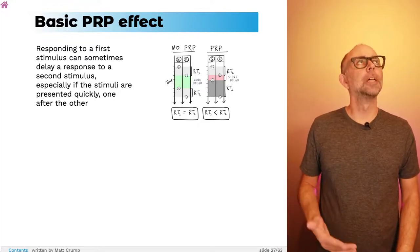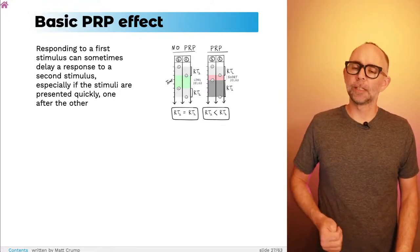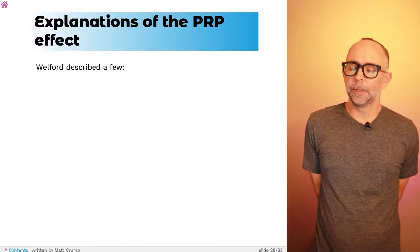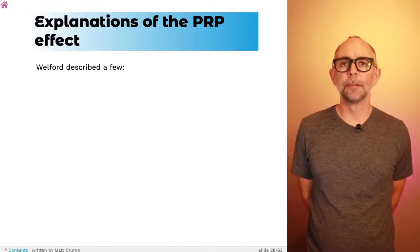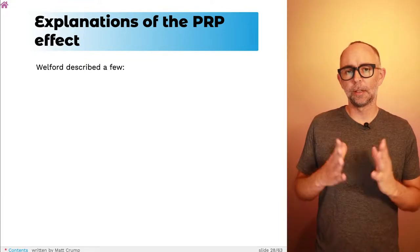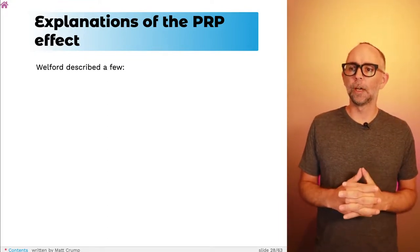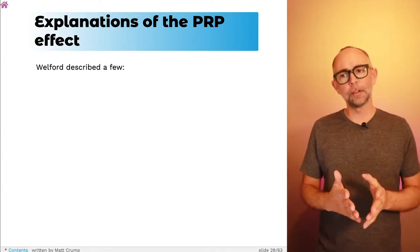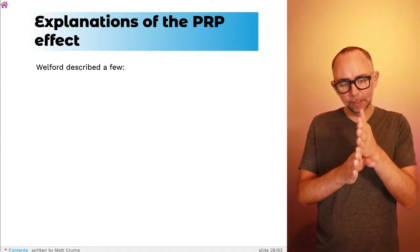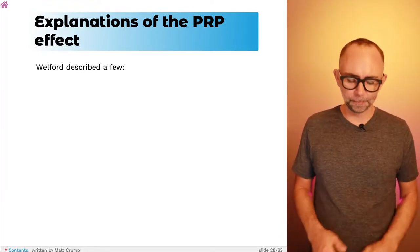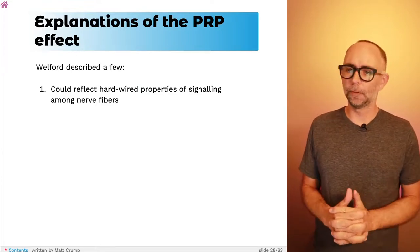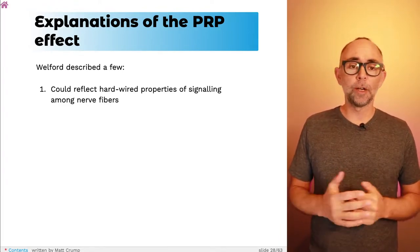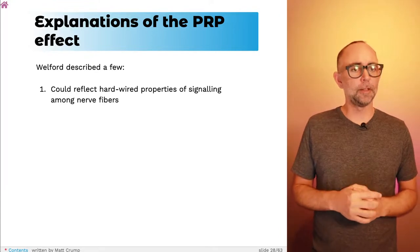People measured this many times, and in the 1950s in cognition journals, many authors tried to explain why this happens — why your second response is a little bit longer if the second stimulus happens very soon after a first stimulus. Here are a couple explanations that Welford put forward. Maybe there are just some hardwired properties of signaling among nerve fibers that cause this effect.